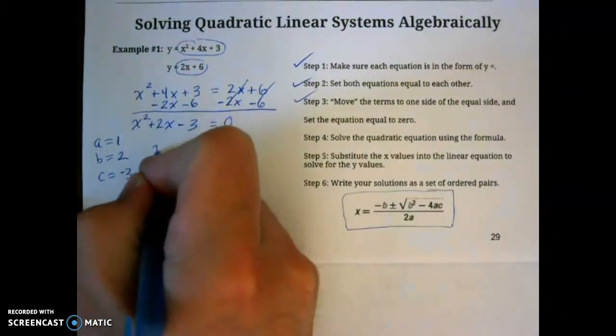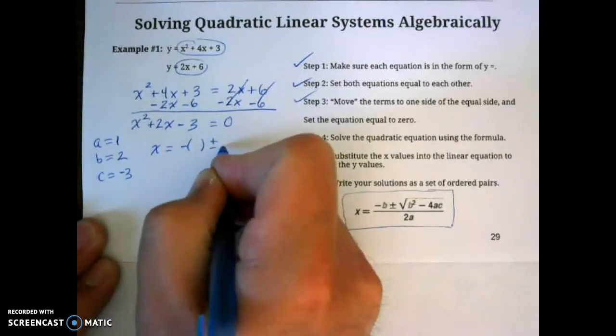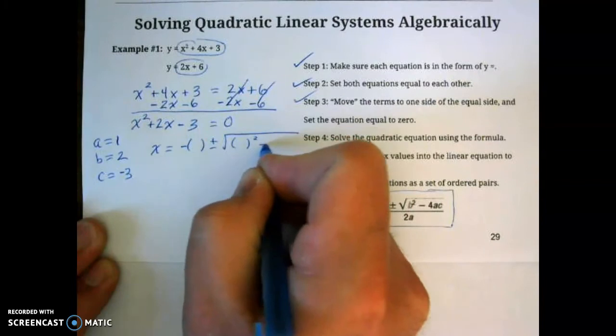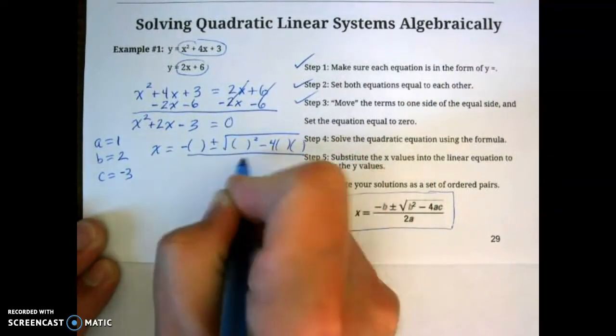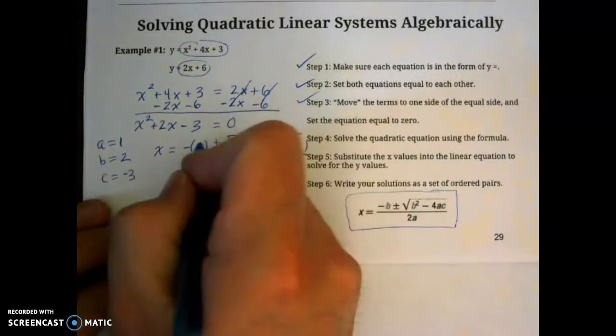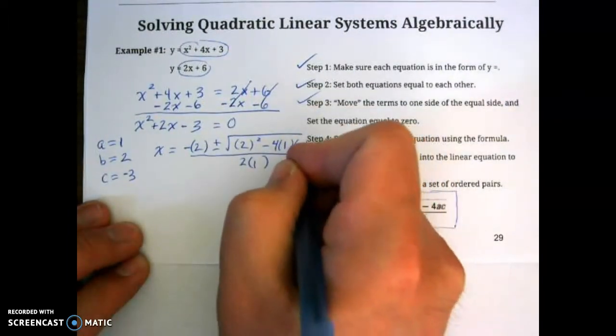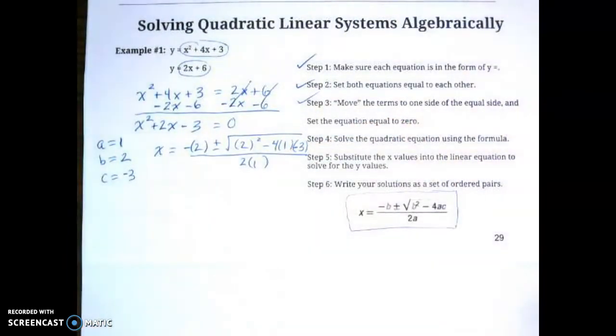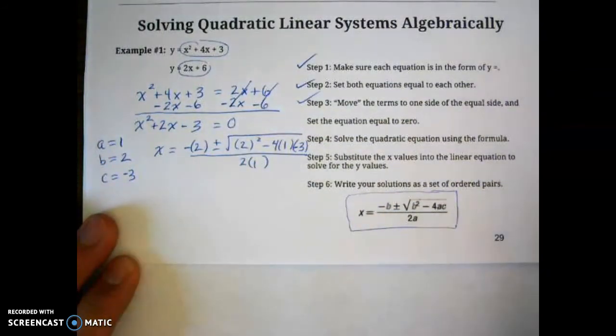So we're going to substitute into our x equals negative b plus or minus the square root of b squared minus 4 times a times c all over 2a. Now, I like to substitute after the fact. So b is 2, a is 1, and c is negative 3. Now if you remember, you're going to take what's underneath the square root.